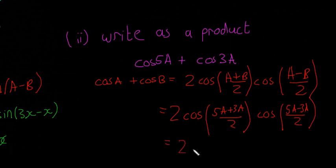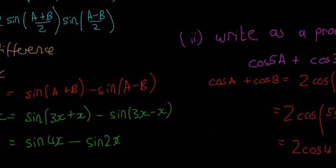So our final answer is going to be 2 cos 4a cos of a. And that's what our answer is. So this cos 5a plus cos 3a is the same as 2 cos 4a cos a. So that's all there really is to it, to those ones anyway.